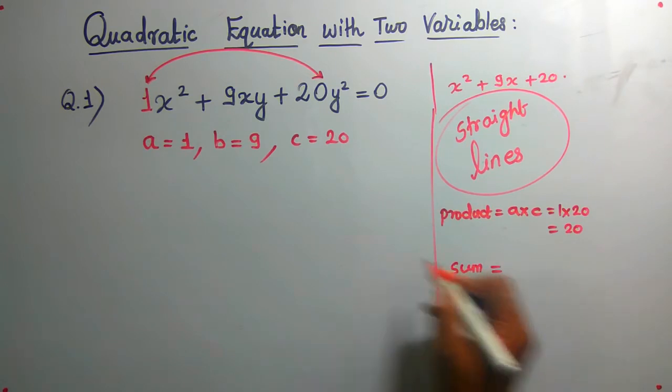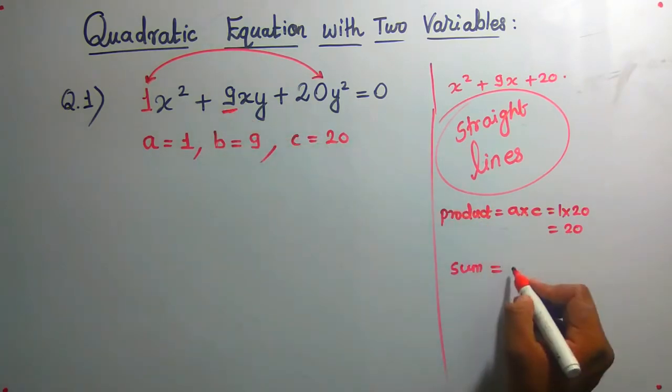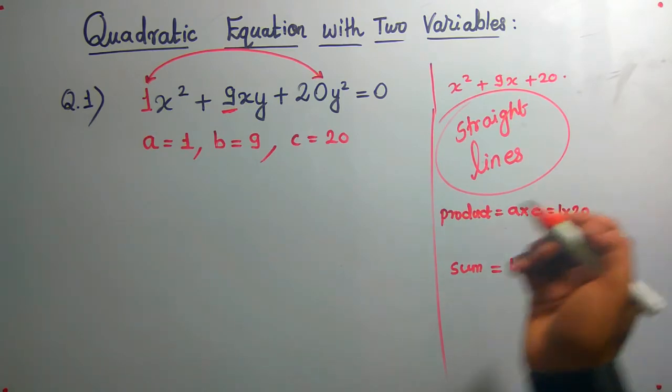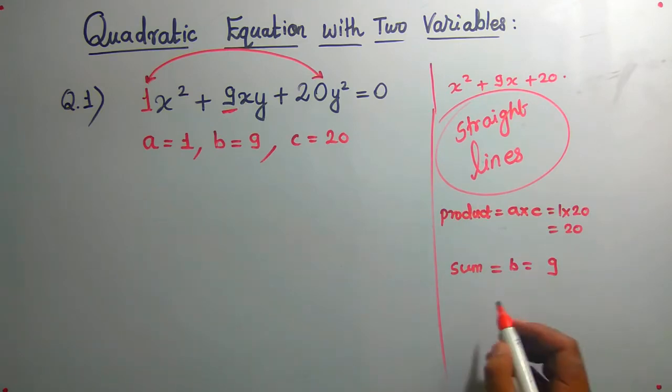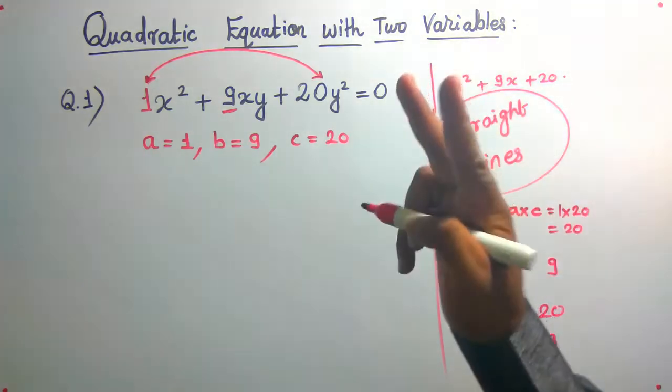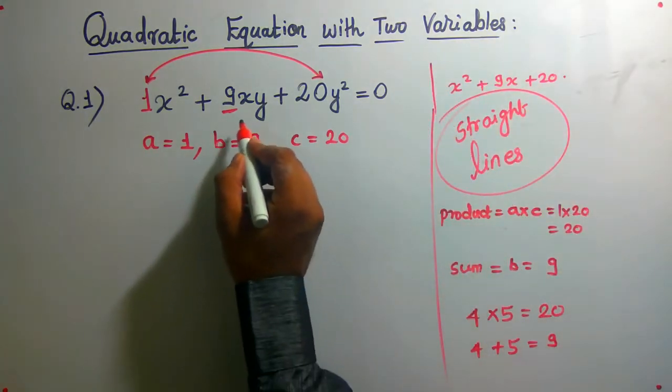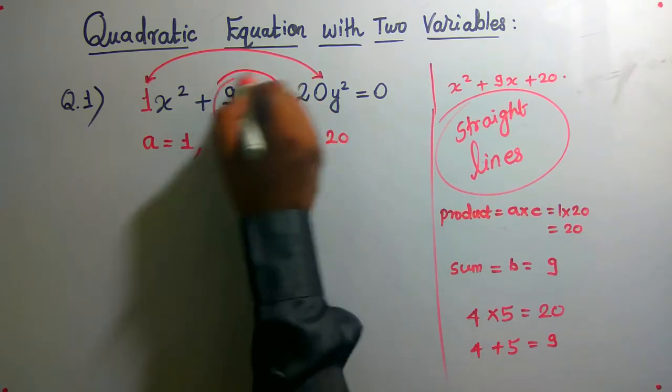And sum is equal to the middle term, that is b, which is 9. Tell me two numbers whose product is 20 and total is 9. I can say 4 into 5, because 4 into 5 is 20 and 4 plus 5 is 9. So I got two values: 4 and 5.